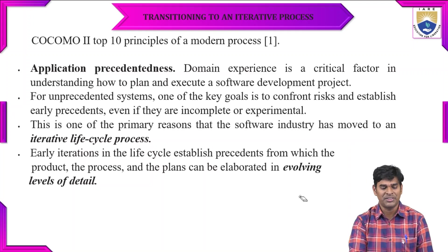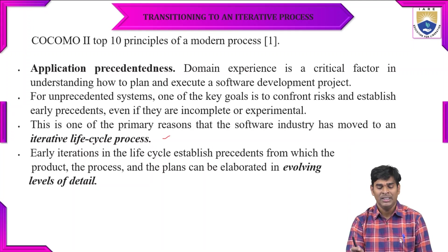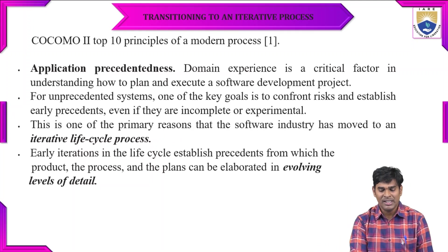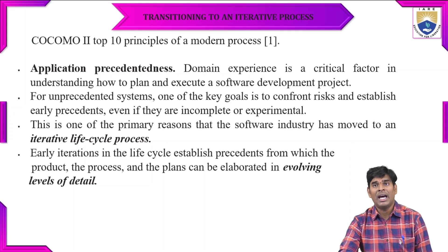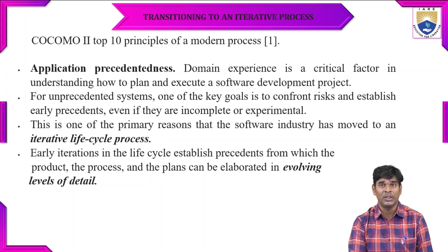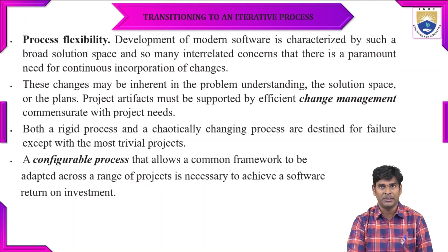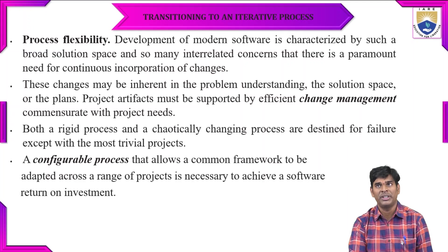If they are not identifying the faults, this can be considered as incomplete or experimental. The primary reason for the software industry is the iterative life cycle process. This is the first principle. The next principle is evolving levels of details. LCA iterations in the life cycle establish the product, the process, and the plans. They need to consider what are the different types of products and which process they need to implement. And what are the plans they are going to elaborate at each and every level of the software applications. The third principle is process flexibility — they need to check the broad solution space and whether it will be interrelated concerns, so that it can be used for continuous incorporation of changes.